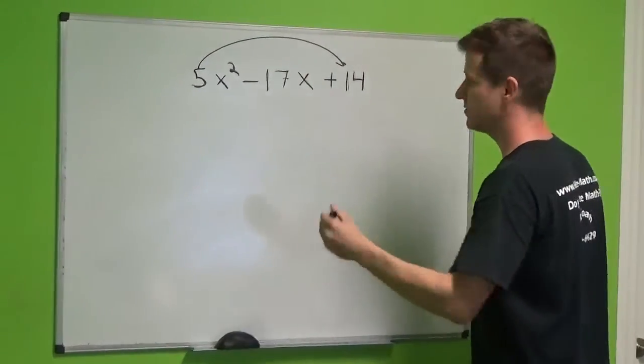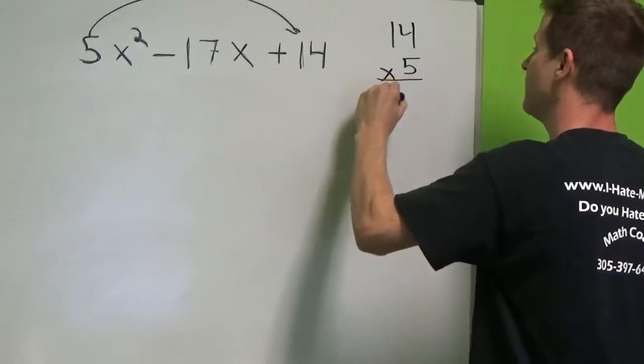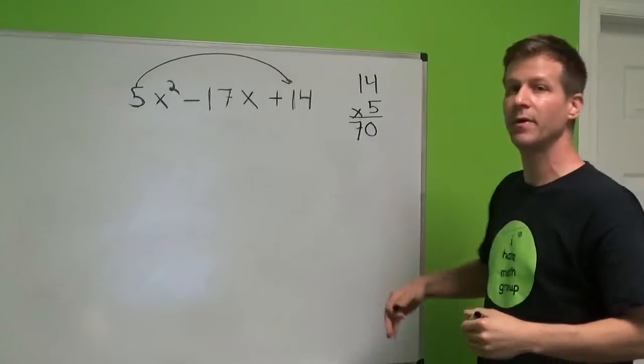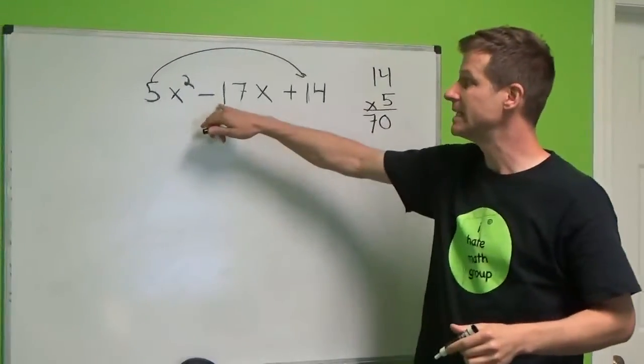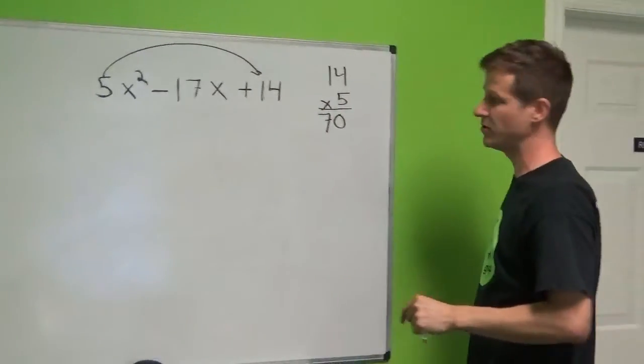5 times 14 is going to give us 70. When we multiply, we give us 70. But when we combine or add, we give us negative 17. Well, we can't use this. 14 and 5 do not work.